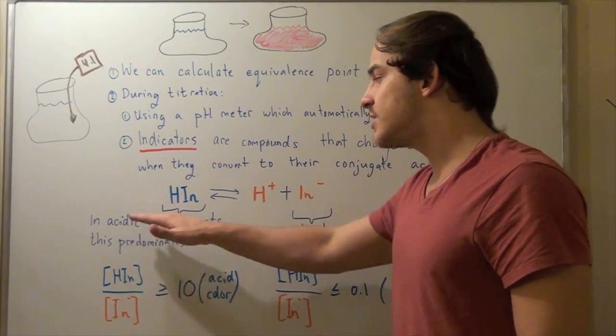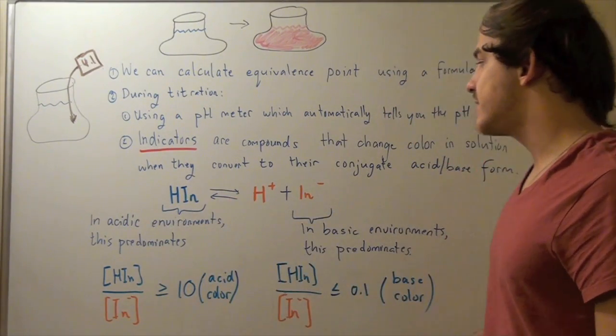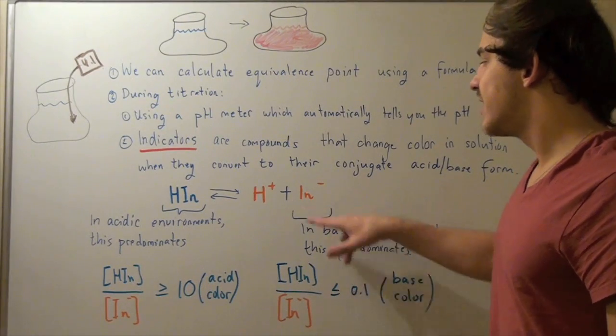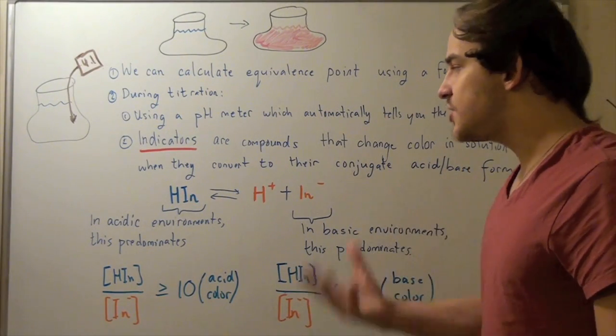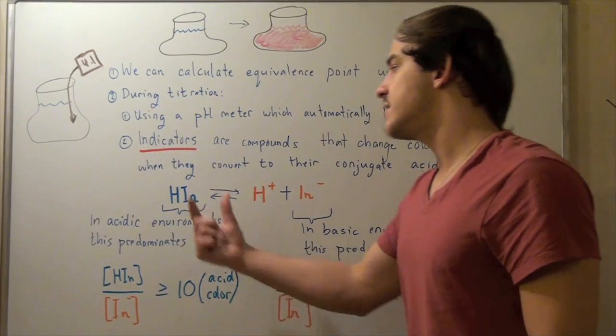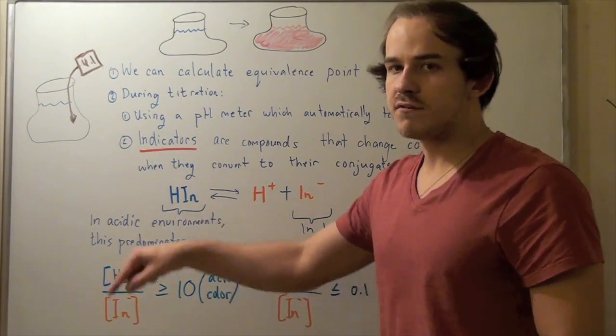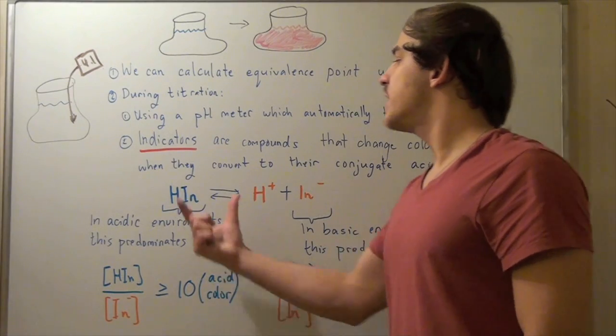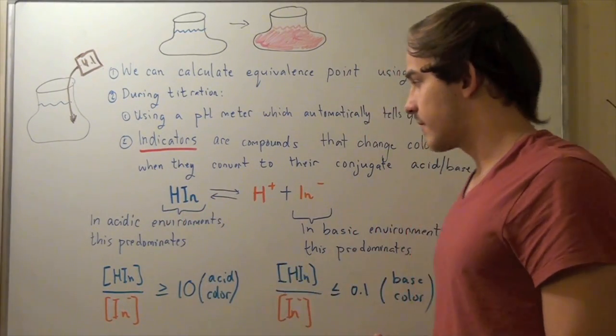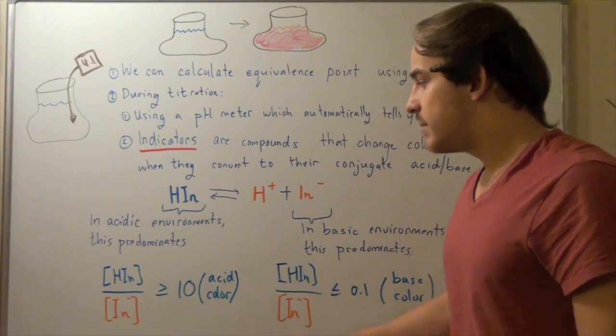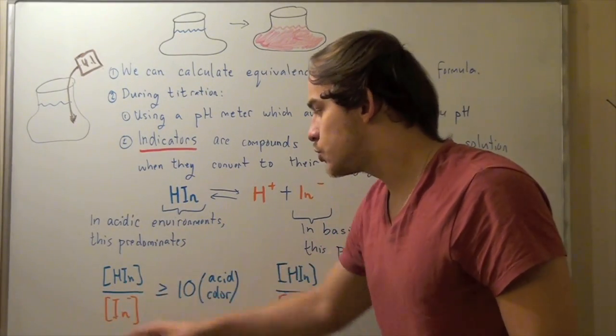So, once again, in acidic solutions, this guy dominates, and in basic solutions, this guy dominates. We can look at the ratio of the concentration of this guy to this guy. And when the ratio is 10 or above, that means we're going to be of this guy, of this color, the acid color, because there's much more of this than this in our solution.